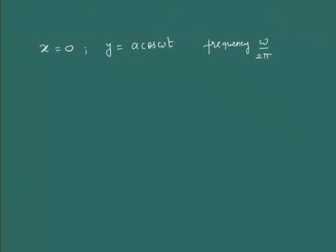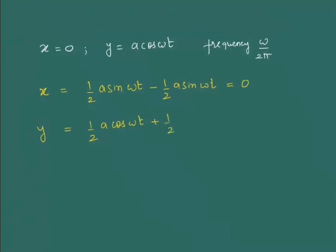I can rewrite this as: x = (1/2)a·sin(ωt) + (-(1/2)a·sin(ωt)) which makes the x-component zero, and y = (1/2)a·cos(ωt) + (1/2)a·cos(ωt) = a·cos(ωt). So I can write x = x₁ + x₂ and y = y₁ + y₂. Since this was our linear vibration, we are writing it as a combination of two circularly polarized lights.